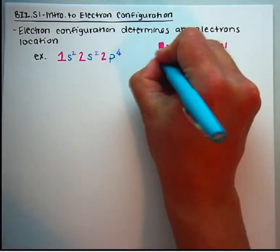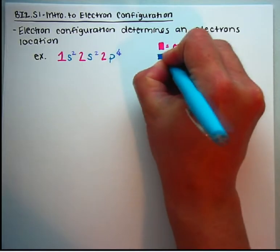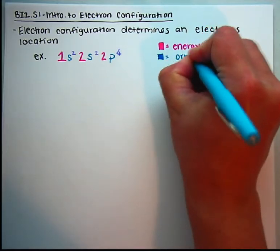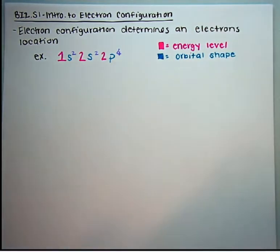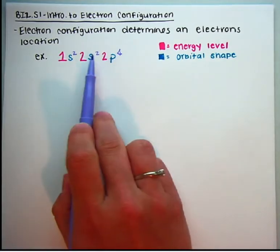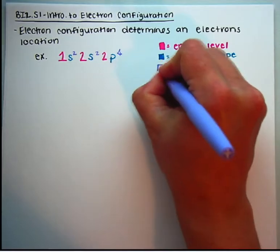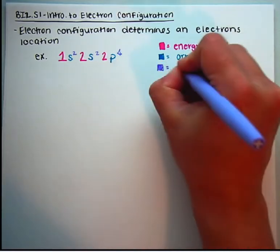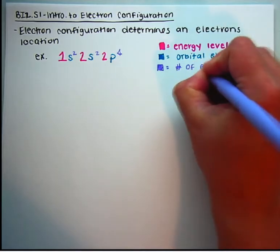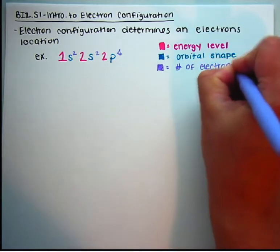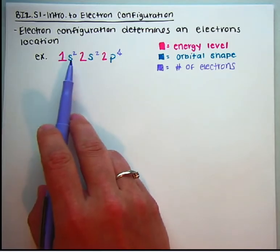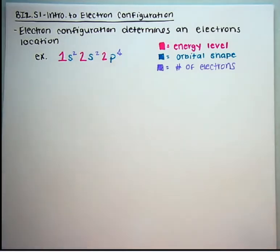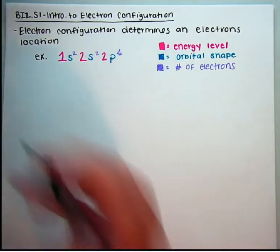The letters — the S and the P — those letters in blue represent the orbital shape. And then lastly, those exponents, or what we call a superscript — those small numbers in purple — will tell you the number of electrons. So if I see 1s2, that tells me there are two electrons in an S orbital in the first energy level. Let's go through these three in a little bit more detail.